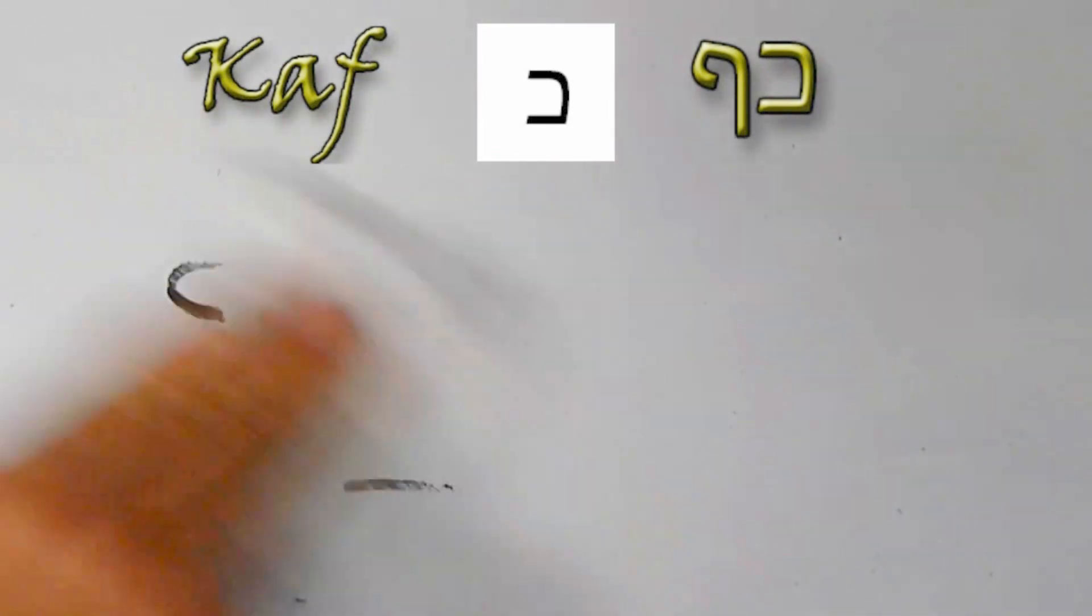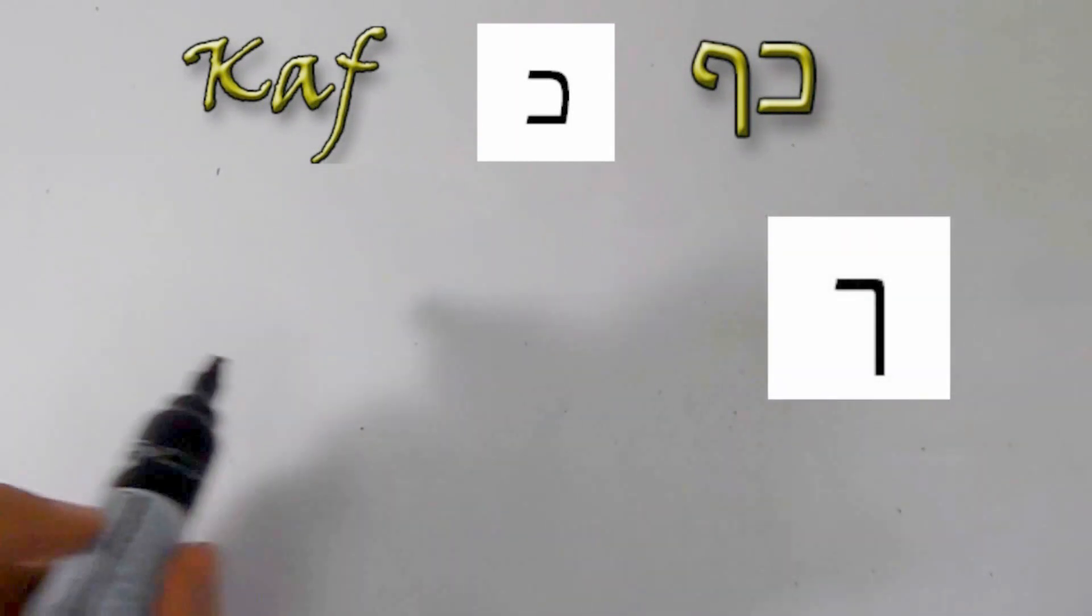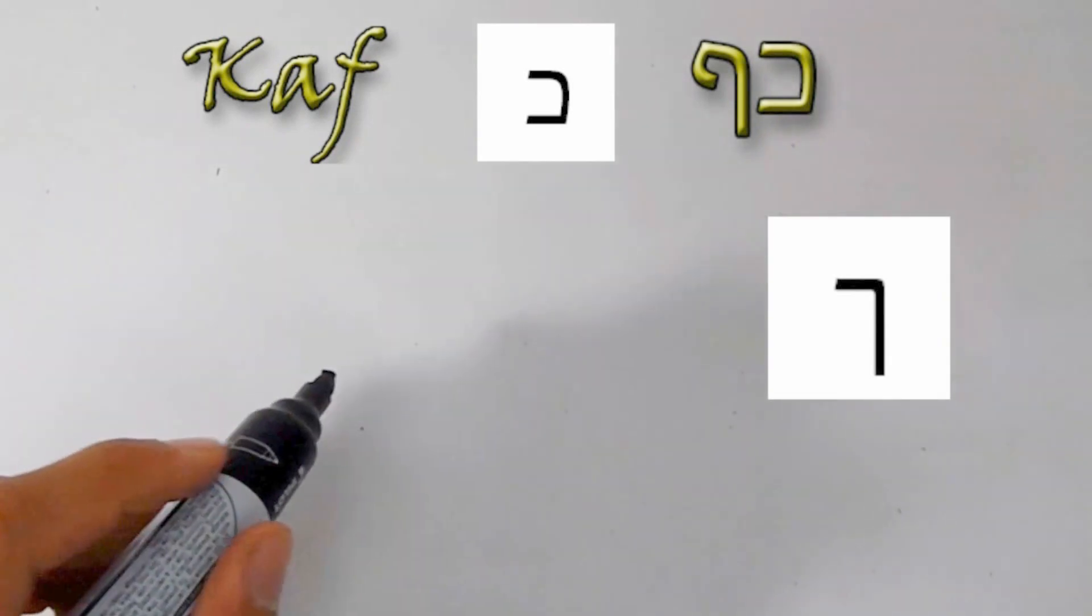Another special feature of this letter: whenever this letter comes at the end of a word, it appears differently. In Hebrew, we have these letters that are written down differently whenever appeared at the end of a word.